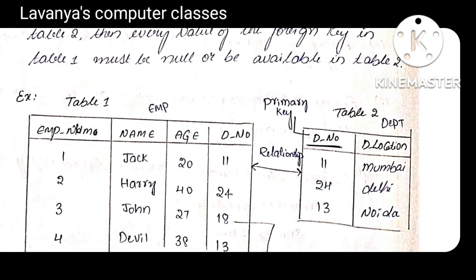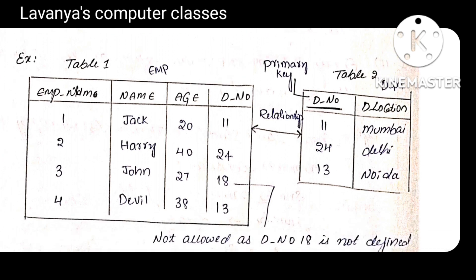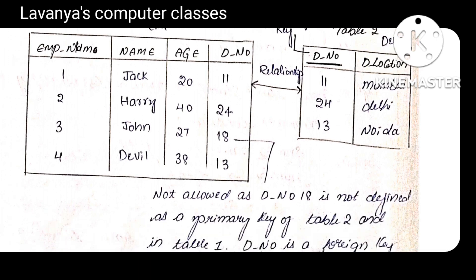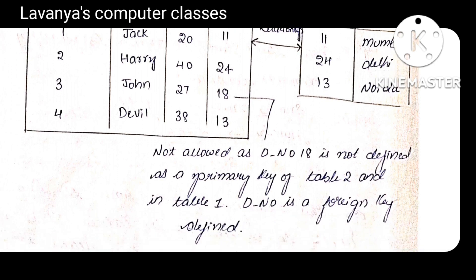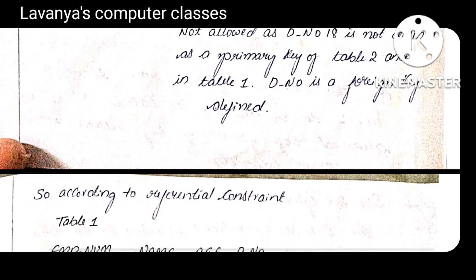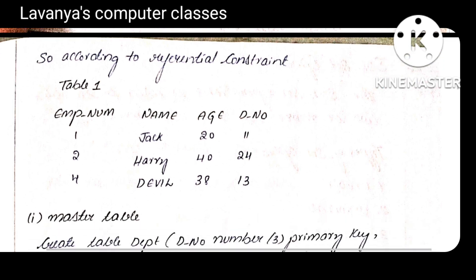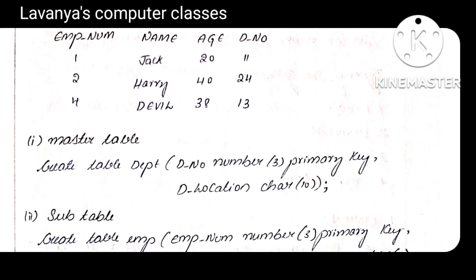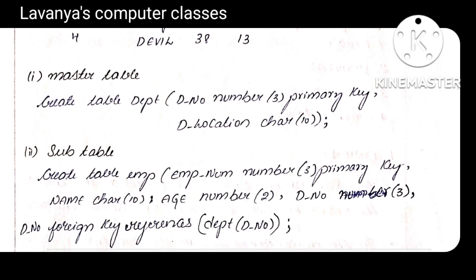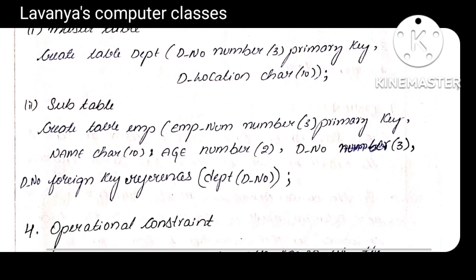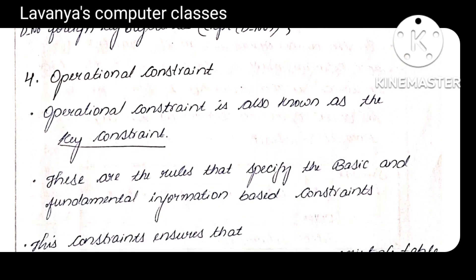There are two example tables: one is the employee table (sub table) and the second is the department table (master table). If any employee is recruited in the employee table, the department in which that employee is working should be available in the department table. If the department number is not there in the department table, the entry is not accepted. DNO is the primary key in the master table; in the sub table, DNO is a normal key but it is always the referential (foreign) key, always referring to the primary key of the master table.